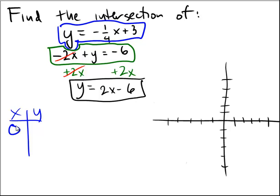But if we choose a number, for example, 0, then according to the blue equation, y would be equal to negative 1 fourth times 0 plus 3, which is equal to 3. So 0, 1, 2, 3 would be a point on the blue line.